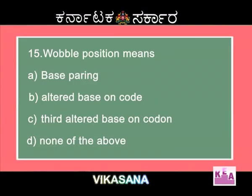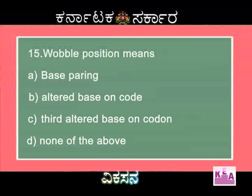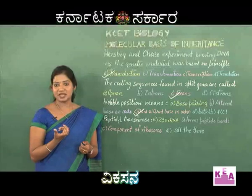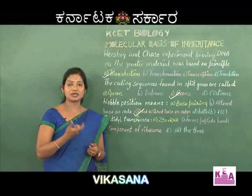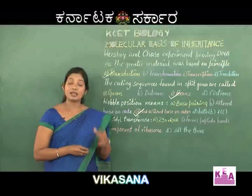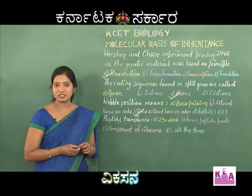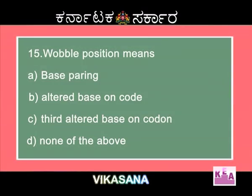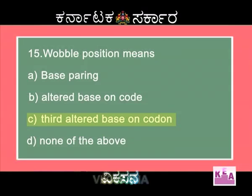According to the wobble hypothesis, when complementary base pairing takes place between the anticodon of transfer RNA and the codons of messenger RNA, all three should be complementary. However, according to wobble hypothesis, if the last base is not exactly complementary, base pairing will still occur. Option D — both B and C — is there just to mislead. So the right answer is option C: third altered base on codon, meaning if the third base is not complementary, base pairing will still take place.